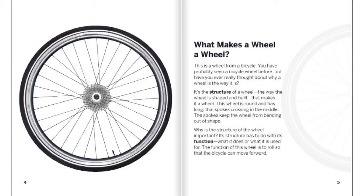What makes a wheel a wheel? This is a wheel from a bicycle. You have probably seen a bicycle wheel before, but have you ever really thought about why a wheel is the way it is? It's the structure of a wheel — the way the wheel is shaped and built — that makes it a wheel. This wheel is round and has long thin spokes crossing in the middle. The spokes keep the wheel from bending out of shape.